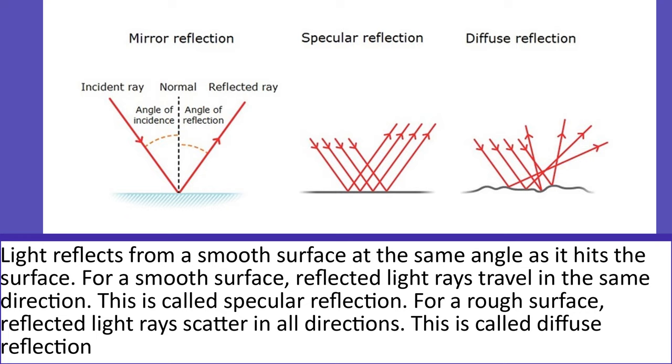Light reflects from a smooth surface at the same angle as it hits the surface. For a smooth surface, reflected light rays travel in the same direction. This is called specular reflection. For a rough surface, reflected light rays scatter in all directions. This is called diffuse reflection.